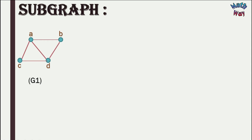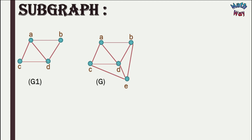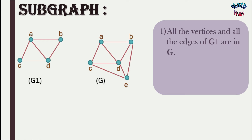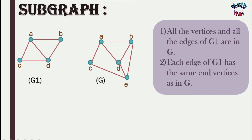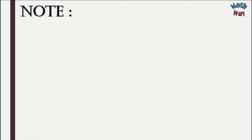To understand the concept of subgraph, let's consider two graphs G1 and G. We can say G1 is a subgraph of G if two conditions hold: one, all the vertices and all the edges of G1 are in G; and two, each edge of G1 has the same end vertices as in G. You can observe here all the vertices of G1 are present in G — in fact G has one extra vertex — and all the edges of G1 are also present in G with the same end vertices. Hence we can say G1 is a subgraph of G.